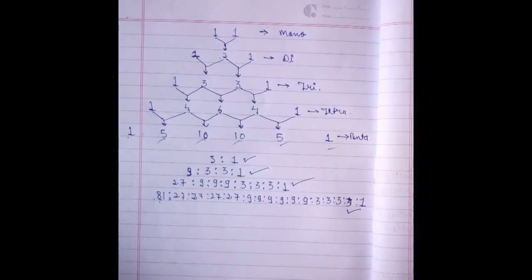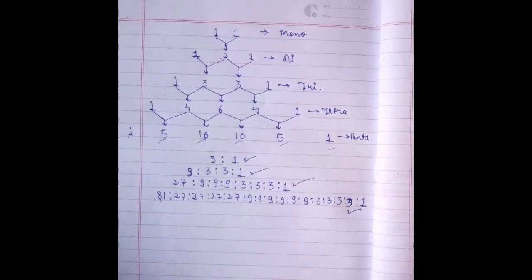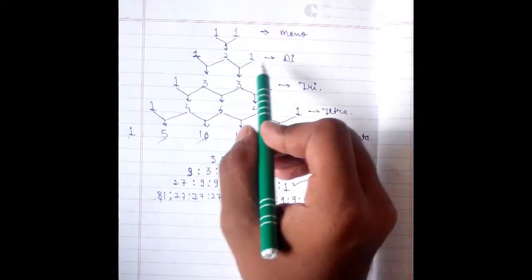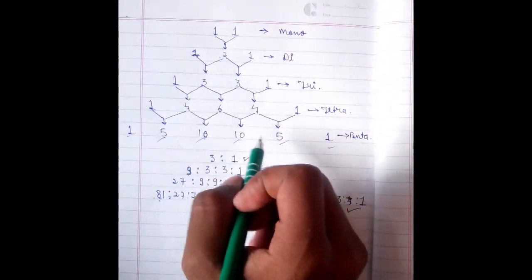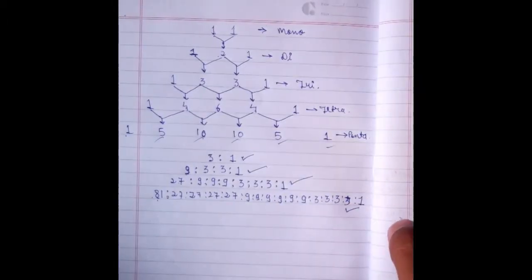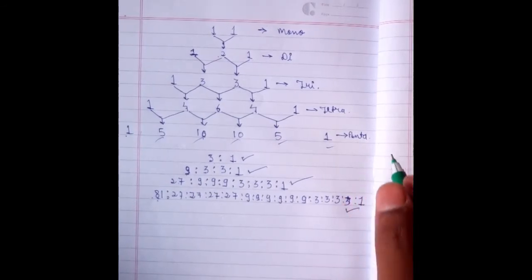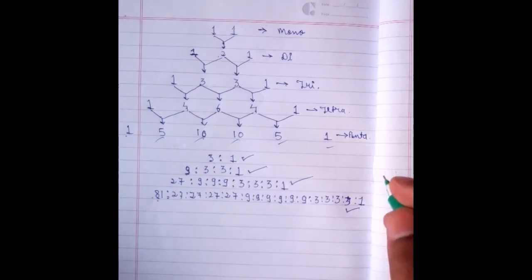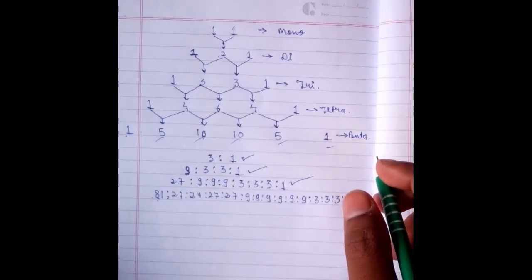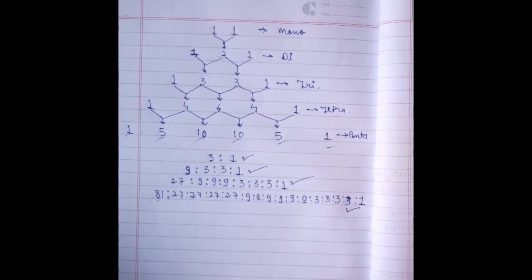So this is the method to find out the phenotypic ratio of any cross — whether mono, di, tri, tetra, or penta hybrid — you can find it in just a second. You just have to remember this, or if you forget, you can rebuild it quickly. You can use it in NEET and AIIMS exams, but in board exams this formula may not be acceptable and such hard questions are usually not asked. Thanks for watching.